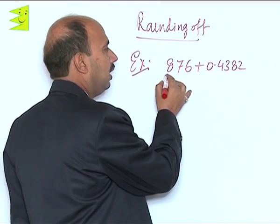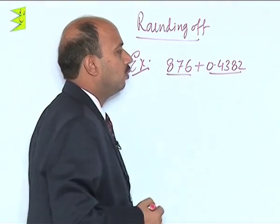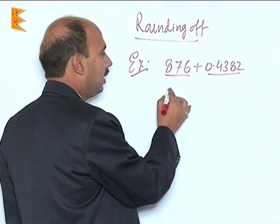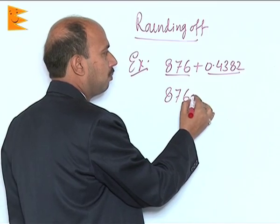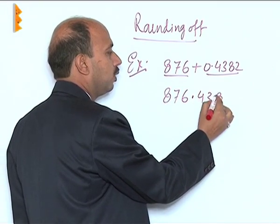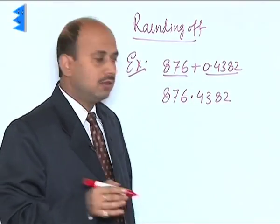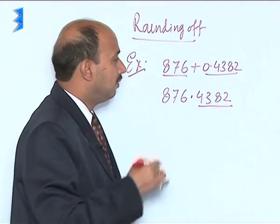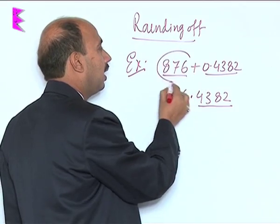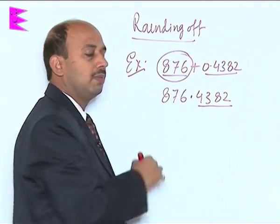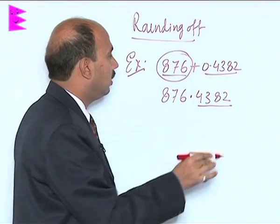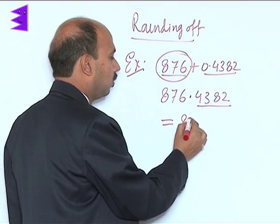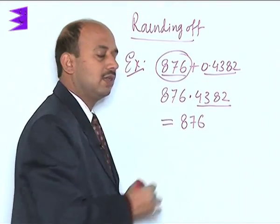Now, in this example, you have 876 plus 0.4382. If you add these, you get 876.4382, but the result has 4 decimal places. However, the number 876 in the original question has no decimal places, so you have to round the answer off to 876.